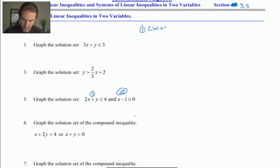I'm going to rewrite the first one up here. It says 2x plus y is less than or equal to 4. I'm going to solve this to make it look more like a y equals mx plus b kind of statement. So I'll subtract 2x from both sides, so that y is now less than or equal to negative 2x plus 4.